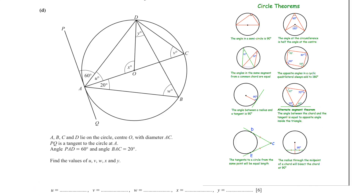The first part is to find u. This is a tangent and this is the radius, so we apply the rule: the angle between a radius and a tangent is 90 degrees. Therefore u is equal to 90 minus 60, which is 30.